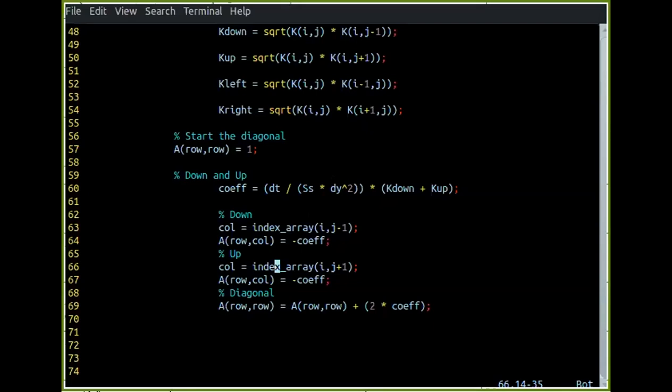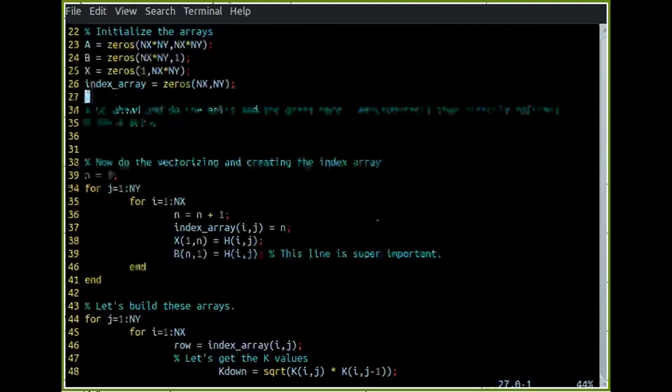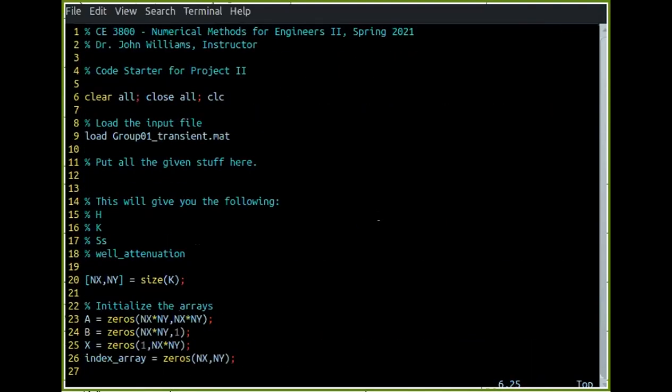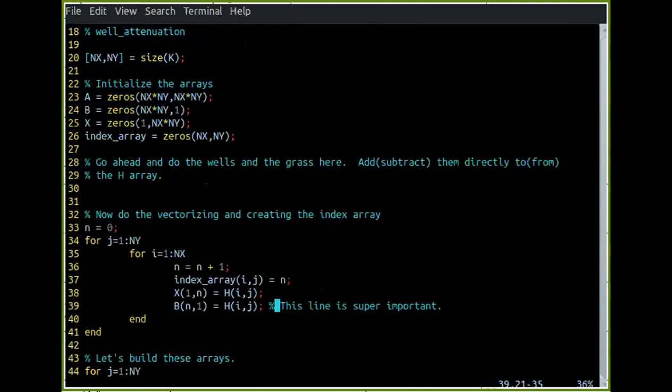So let's jump over to the whiteboard. Let's talk about the wells and the grass briefly. That's the stuff you're going to actually do before you start vectorizing your values. So you're going to do wells and grass while you're still in grid view. Let's jump to the whiteboard and talk a little bit about that.